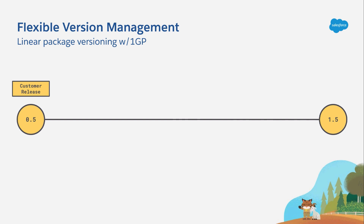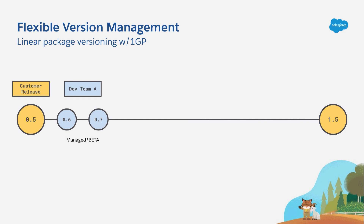Feedback has been really positive, and they've got a backlog full of features that could easily take them to version 1.5 and beyond. So one of their development teams, let's call them Dev Team A, goes to work and starts building new features. Once they hit their stride, they upload package 0.6 and then 0.7, and all the while they're careful to upload only managed beta package versions. During development, that's the right way to do things, because it gives them flexibility in case they need to remove anything from their package.